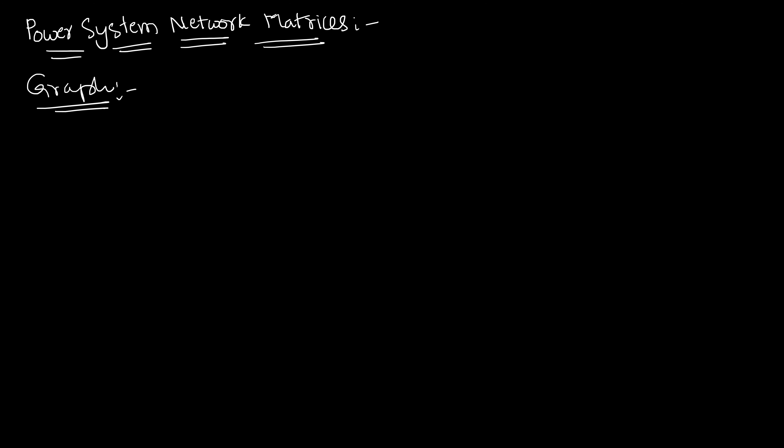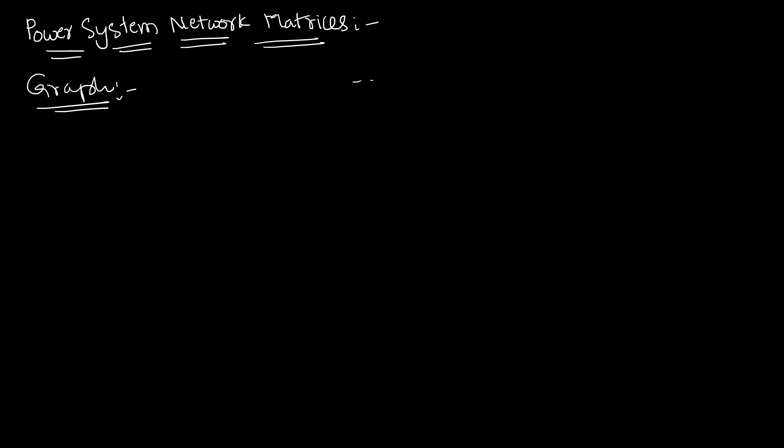First of all, let me tell you what do you mean by graph. In order to describe the geometrical structure of a network — because in power system, it's a combination of different elements like generator, transformer, transmission lines, and so on — if we need to represent the geometrical structure of any network, it is very difficult. So in such a case, we will be representing that with simple line segments irrespective of their characteristics. The combination of those line segments will be called a graph.